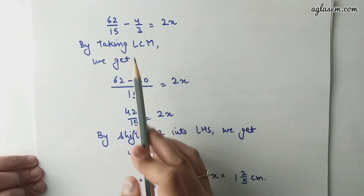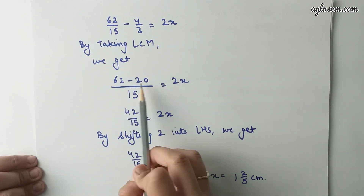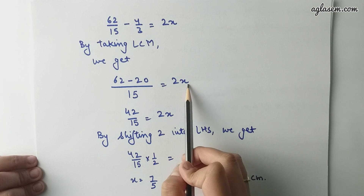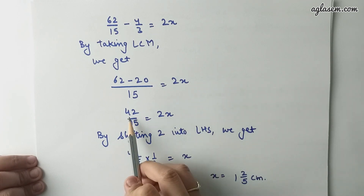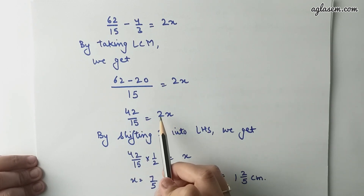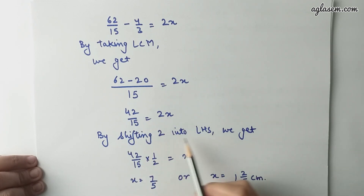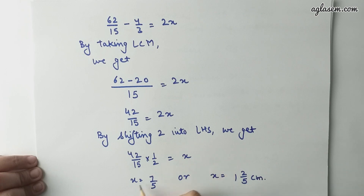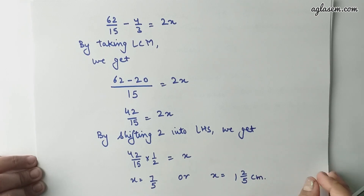By taking LCM, we get 62 minus 20 divided by 15 equals to 2x, giving 42 by 15 equals to 2x. Shifting 2 to the LHS, we get 42 by 15 into 1 by 2 equals to x. Therefore, x is equal to 7 by 5, or 1 and 2 by 5 cm.